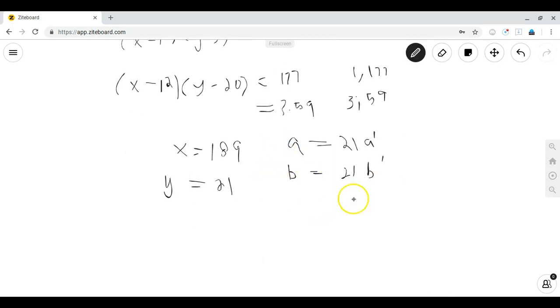So the LCM of 21 a prime and 21 b prime is equal to 21 times the LCM of a prime, b prime, which is equal to 189. And since 189 is divisible by 21, 189 over 21 equals 9.